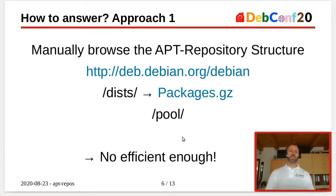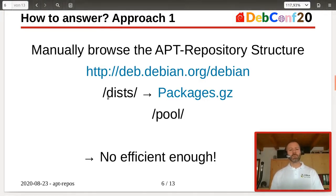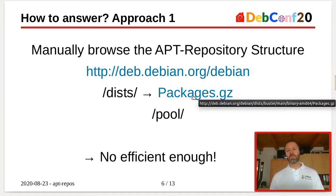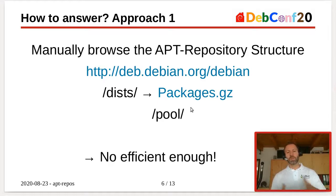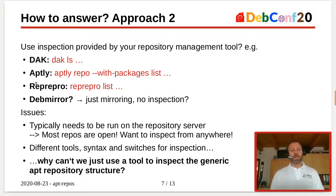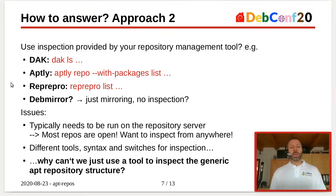How could we answer these questions? First approach: look at the apt repository structure provided by our repository. We can find a dist folder and a pool folder, navigate through the structure, find packages files, unzip them, and look at the list to see which packages are there. But this is not efficient enough. The second approach: since I am a distribution provider, I use tools — for example, the Debian archive kit, aptly, reprepro, or debmirror. Some of these tools allow us to inspect the content of repositories we provide.